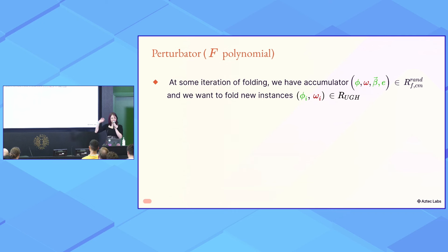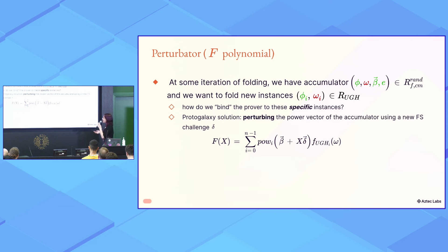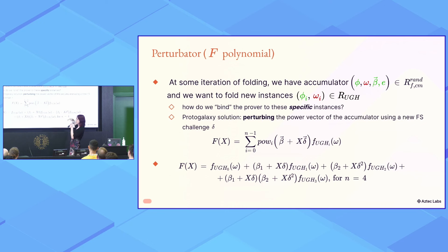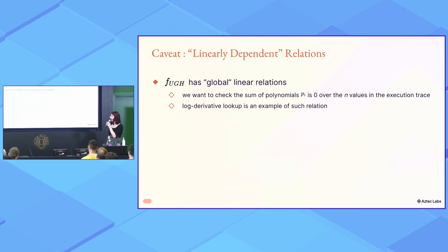First, we have... If you've opened Protogalaxy, you've seen a polynomial called f. We've given names to it because we like names. So basically, we're at some iteration of folding. And we have an accumulator, and we want to fold some more instances. How do we bind the prover to these specific instances? And usually the answer is we generate some challenges. And what happens is basically we perturb the power vector of the accumulator using the new Fiat-Shamir challenges in such a way that we obtain a univariate that has quite a nice form. It looks like it has length n, but in fact, it's a univariate of logarithmic size. So it's nice to operate on. And the prover and the verifier can compute this evaluation of this polynomial.